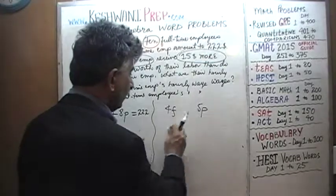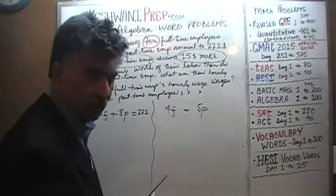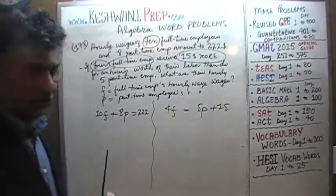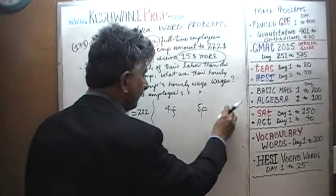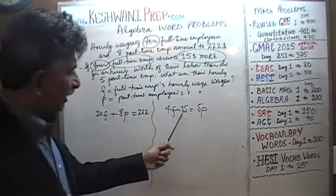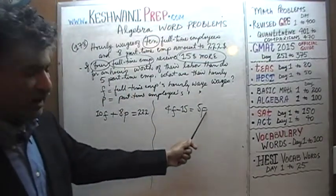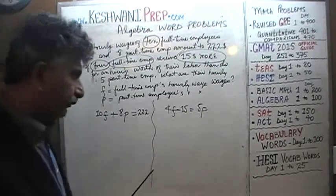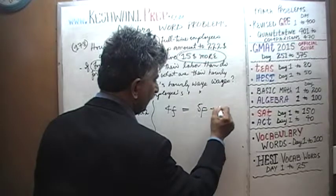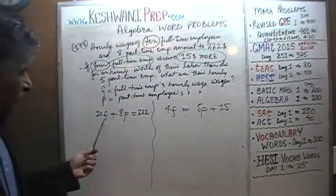We have two choices to fix this. Either we add 15 to the part-time side, giving 4F = 5P + 15, or we subtract 15 from the full-time side: 4F − 15 = 5P. Either way is valid. I'm going to keep the form 4F = 5P + 15 as our second equation.